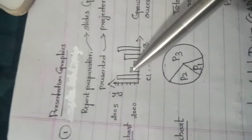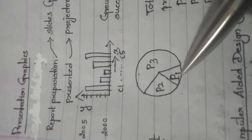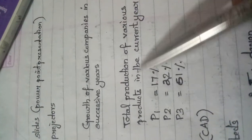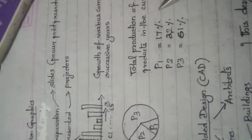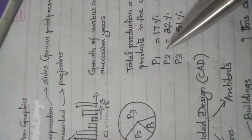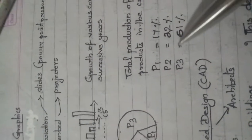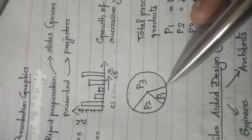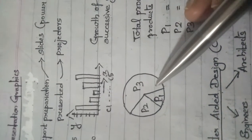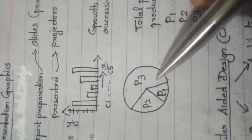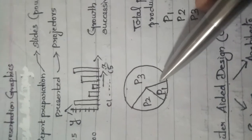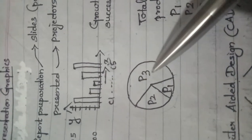Data can either be represented using a bar chart or using a pie chart. Let us have a look at the pie chart. These are three different products: P1, P2, and P3. We are analyzing total production of various products in the current year. Product P1 is produced only 17%, product P2 is 22%, whereas product P3 is produced up to 61%. The total production is represented as a circle, and the majority portion is occupied by product P3, meaning P3 has maximum production.